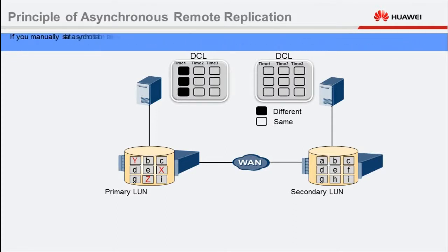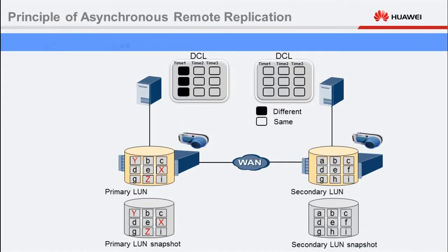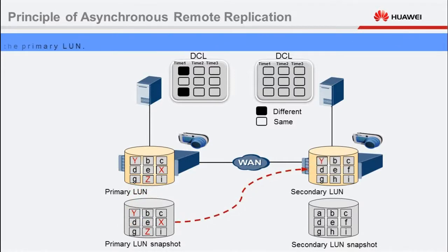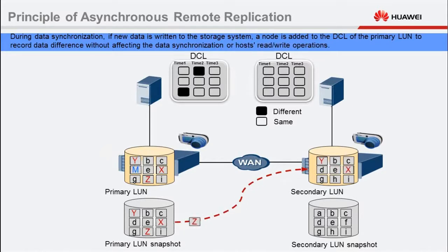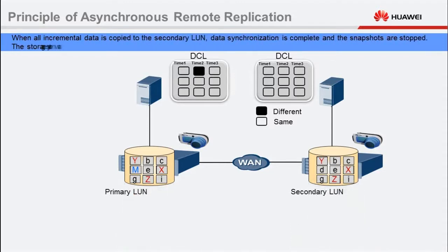If you manually start a synchronization task or the scheduled synchronization automatically starts, the snapshots of the primary LUN and the secondary LUN are activated. The storage system copies incremental data from the primary LUN to the secondary LUN based on the snapshot and DCL of the primary LUN. During data synchronization, if new data is written to the storage system, a node is added to the DCL of the primary LUN to record data differences without affecting the host's read-write operations. When all incremental data is copied to the secondary LUN, data synchronization is complete and the snapshots are stopped. The storage system then waits for the next synchronization.